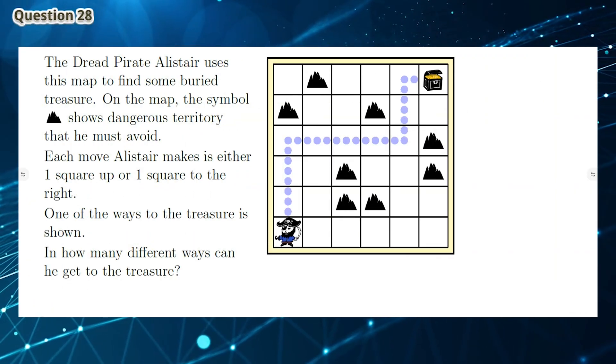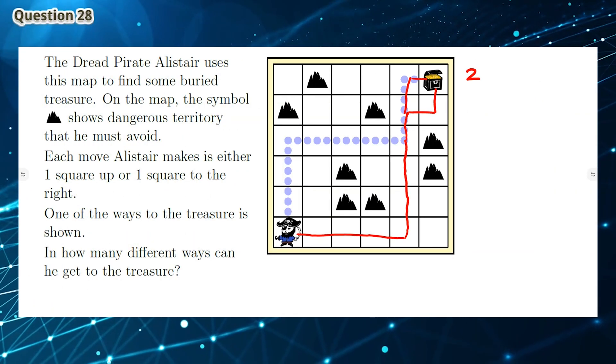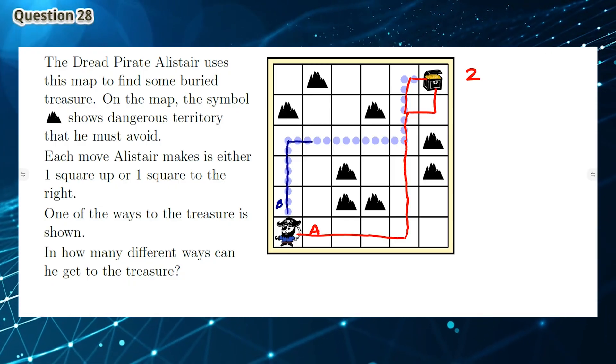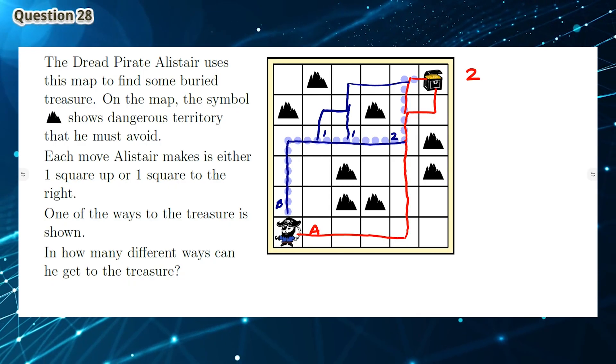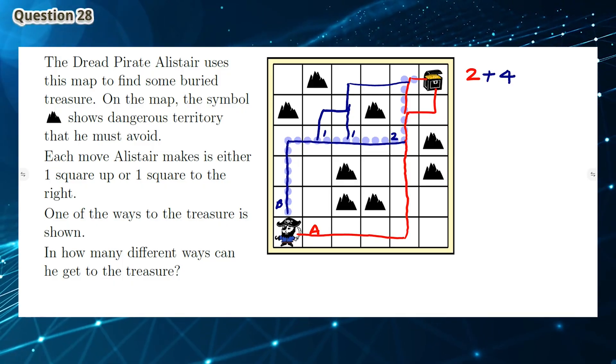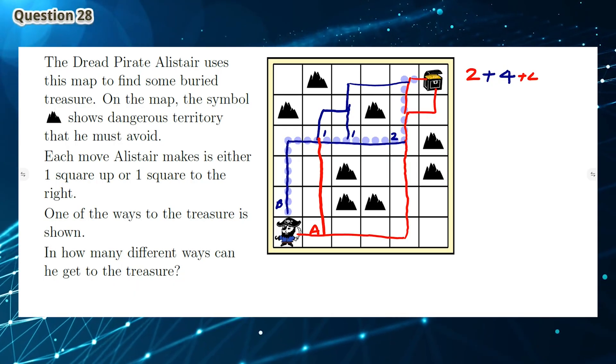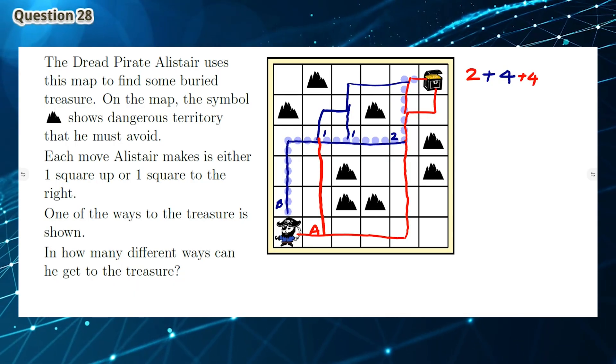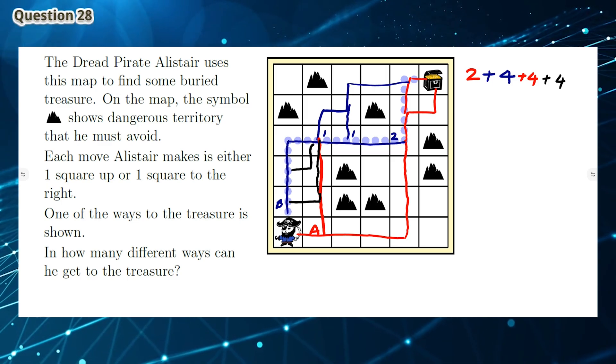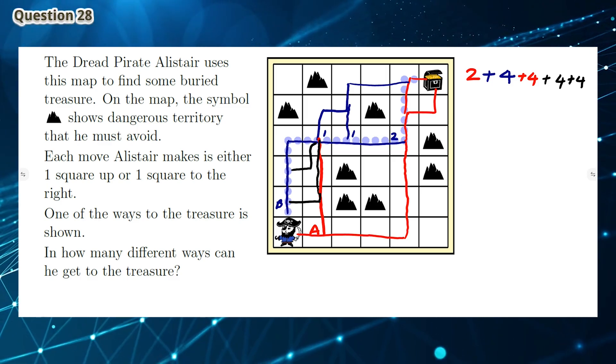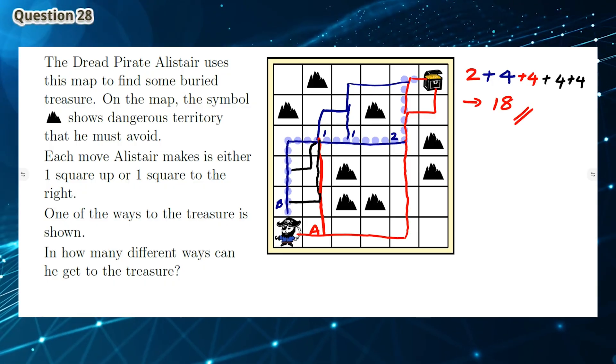Question 28: As per the diagram, we can draw a red line which gives us 2 possible ways to get to the treasure. Then we can draw a blue line which connects to the red line, which gives us 4 possible ways to get to the treasure. Next, we can draw another red line which gives us another 4 possible ways to get to the treasure. Finally, we can draw 2 black lines which gives 2 ways of 4 possible ways to get to the treasure. All together, there are 18 different ways that Alistair can find the treasure.